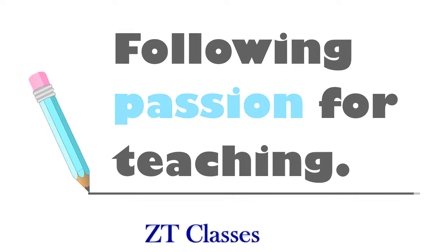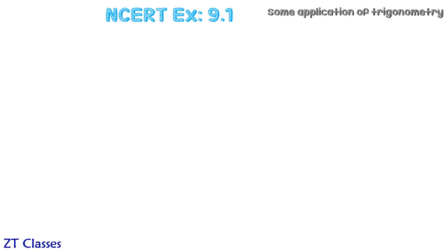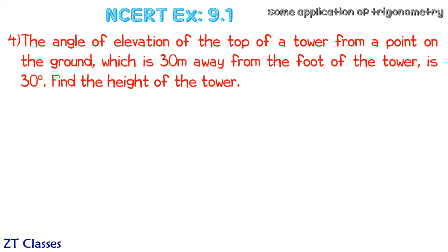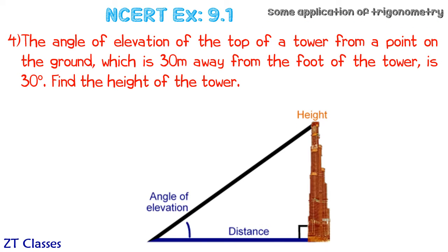Welcome to ZT classes. The angle of elevation of the top of a tower is given from a point on the ground 30 meters away from the tower.